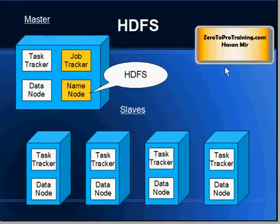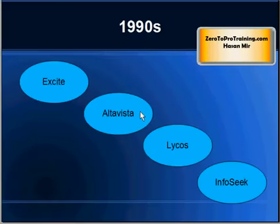Why is Hadoop's architecture so similar to what Google uses? There is a story behind that. In the 1990s, how would you search for something on the web? You would choose one of your favorite search engines — that could be Excite, AltaVista, Lycos, or Infoseek — or maybe use a tool that would search across all these engines and give you a combined result. This is how search looked in the 1990s.